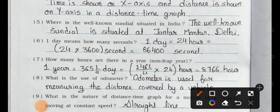Question number five: where is the well-known sundial situated in India? Answer is: the well-known sundial is situated at Jantar Mantar, Delhi. Question number six: one day means how many seconds?